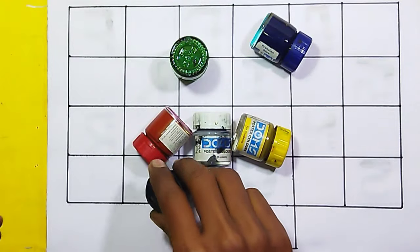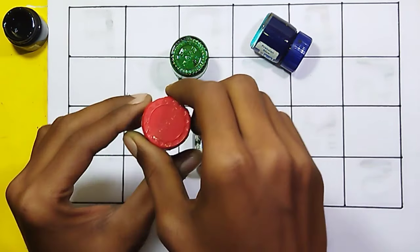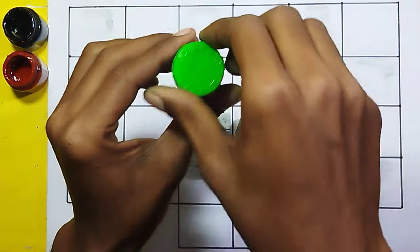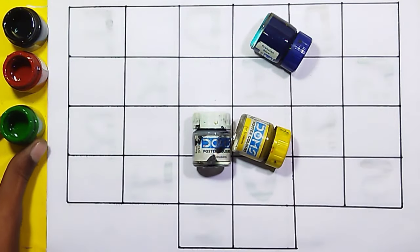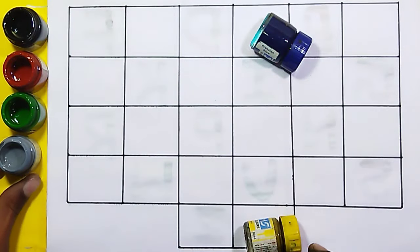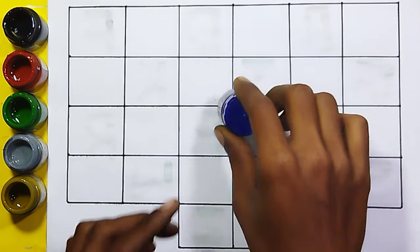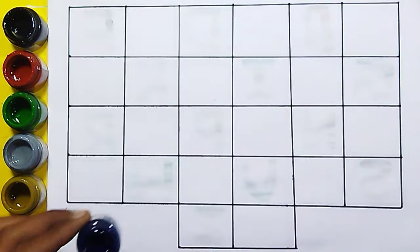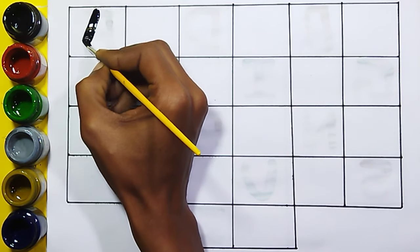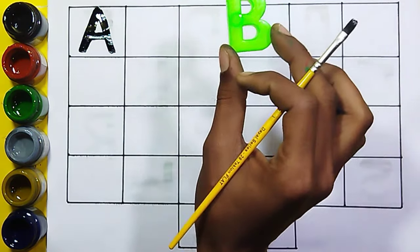Color name: black color, red color, green color. Gray color, yellow color, blue color. A, A for apple, green color B.